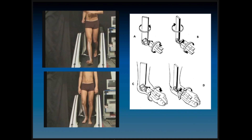The view from the front shows the overlay of the ankle, the oblique axis of the ankle, the forward fall that occurs, the foot going into pronation, the talus going into eversion, the tibia going into internal rotation, and then the opposite effect as you go up on your toes.